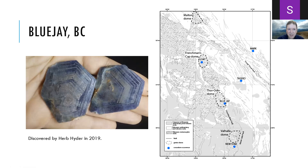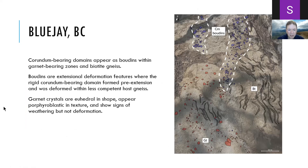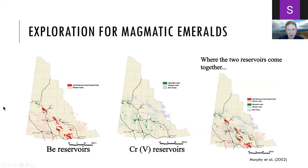We're just starting to work on the Blue Jay Claims — the corundum is in boudins in a biotite gneiss, also associated with lots of garnet. Now I'd like to shift to talking about exploration: how do we find these things?